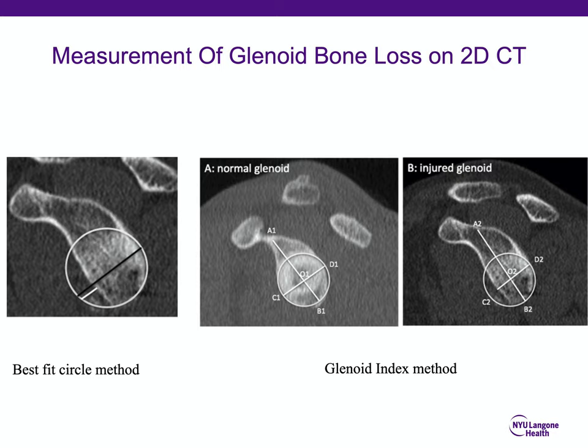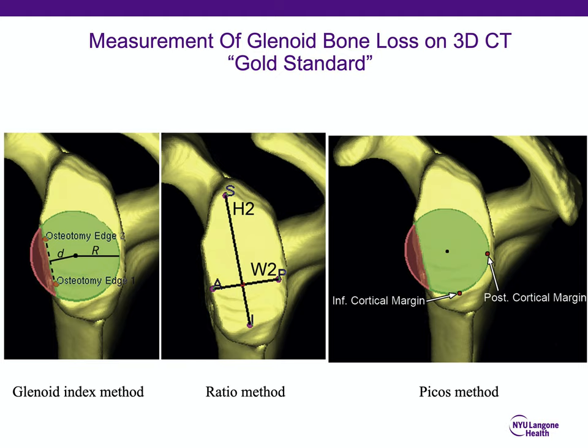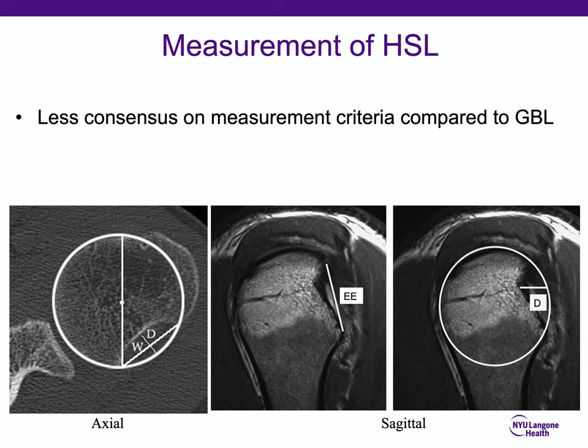Glenoid bone loss can be measured on 2D CT using the best-fit circle method or glenoid index method. On 3D CT, the glenoid index and Pico's method are most commonly used. For Hill-Sax lesion measurement, there is less consensus; it can be measured on axial and sagittal views either by maximum depth and width, or described as percentage involvement of the articular circumference, such as 20–40%.